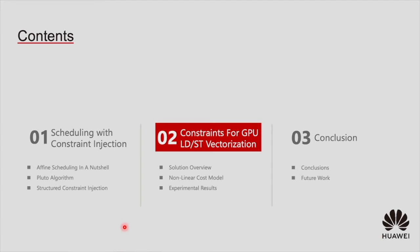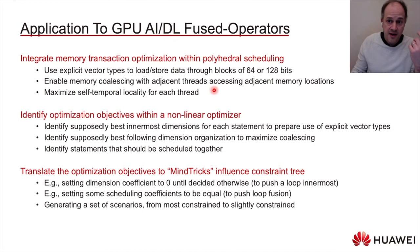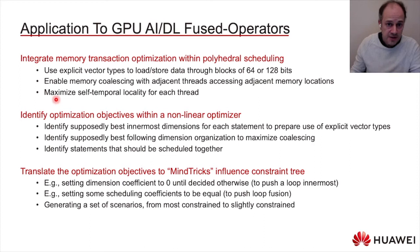Now let's study how to benefit from this mechanism to achieve better optimization in the context of AI fused operators on GPU — specifically, how to better optimize load-store vectorization. Our goal is to optimize the number of memory transactions. To achieve that, our technical goals are: first, enable the use of explicit vector types to load and store data by blocks; second, maximize memory coalescing by ensuring adjacent threads access adjacent memory locations. Notably, this second goal is often the unique priority in many compiler techniques, but we experience better results by targeting explicit vectors first. Finally, we want to maximize self-temporal locality for each thread.